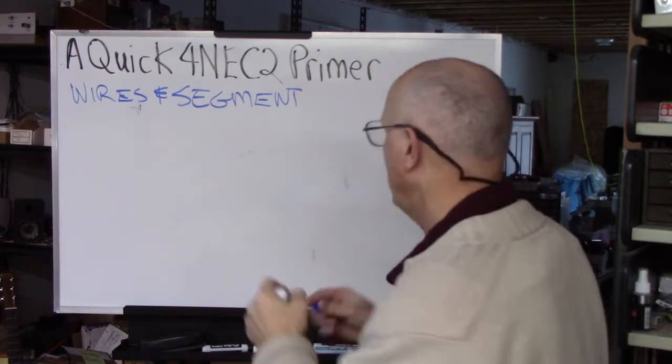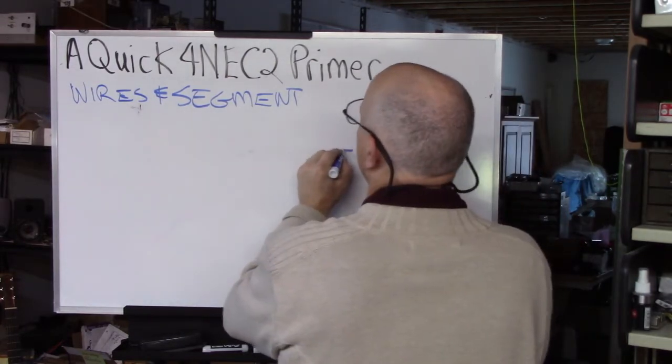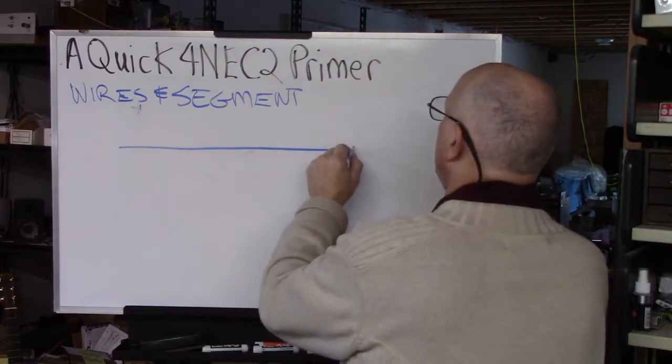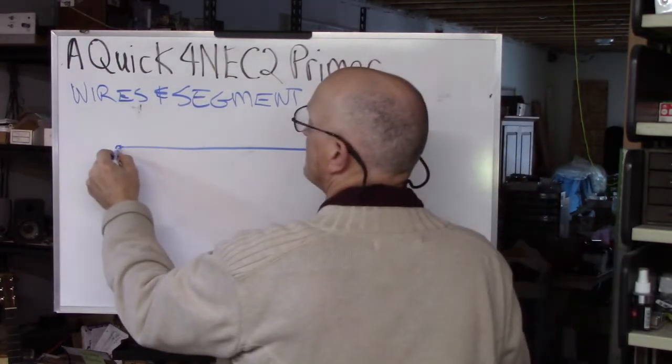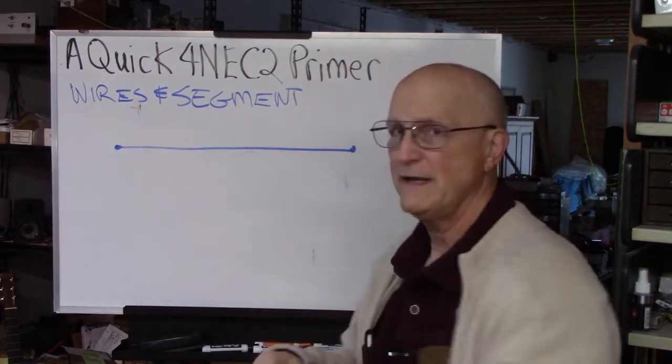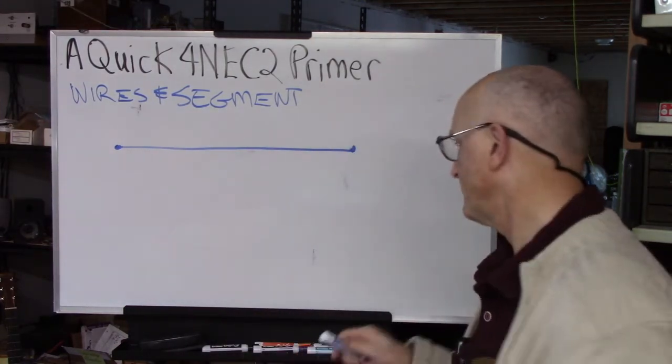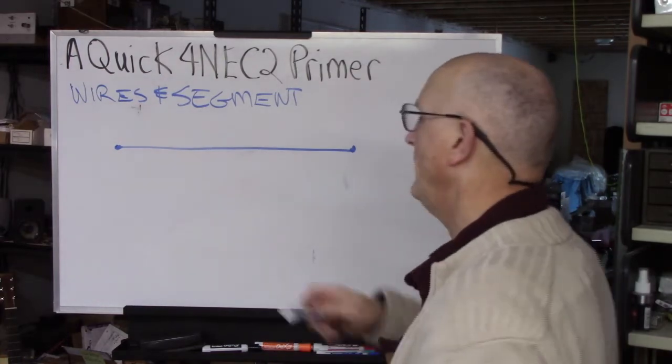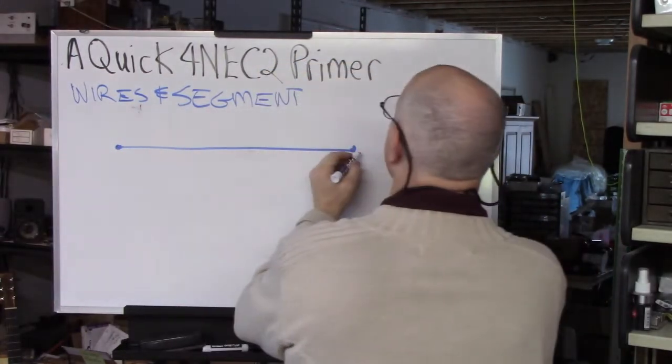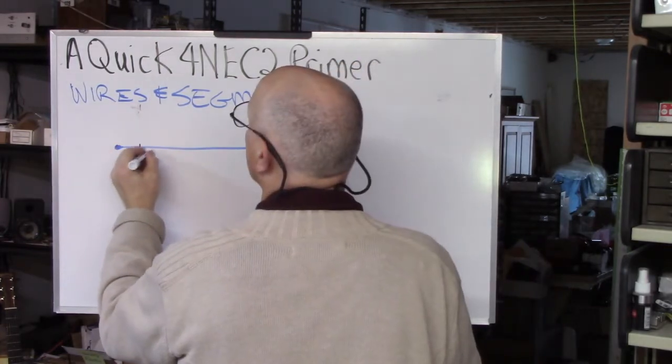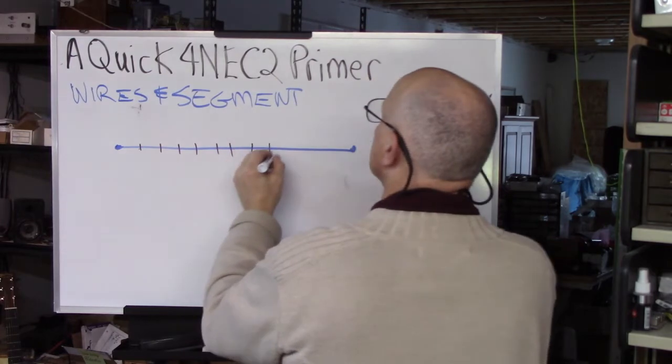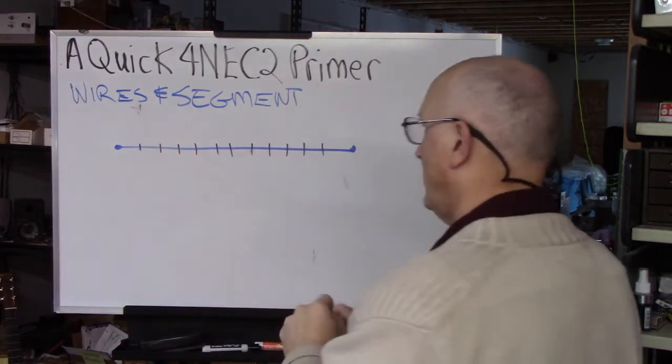So think of it this way. You have a wire and here's my antenna. It is this wire that extends from here to here. Now for analysis purposes, 4NEC2 needs this wire broken up into smaller segments.